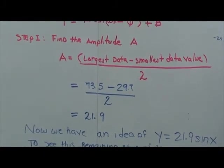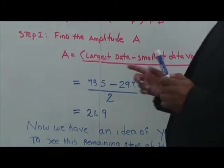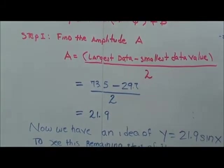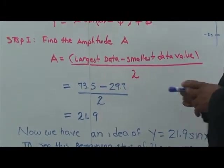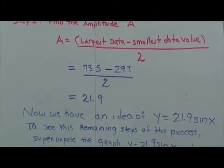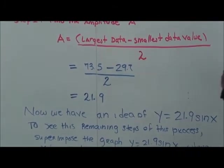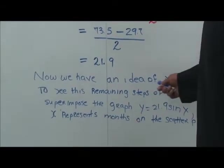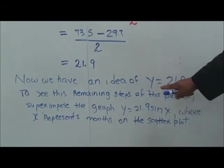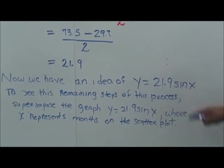So, 73.5, which is the hottest temperature on there, minus, I believe, the coldest temperature in this data, and divide that by 2. So, we come up with 21.9, which is representing the amount of amplitude. So, now we have an idea of what this is. And so, y is 21.9 sine x.